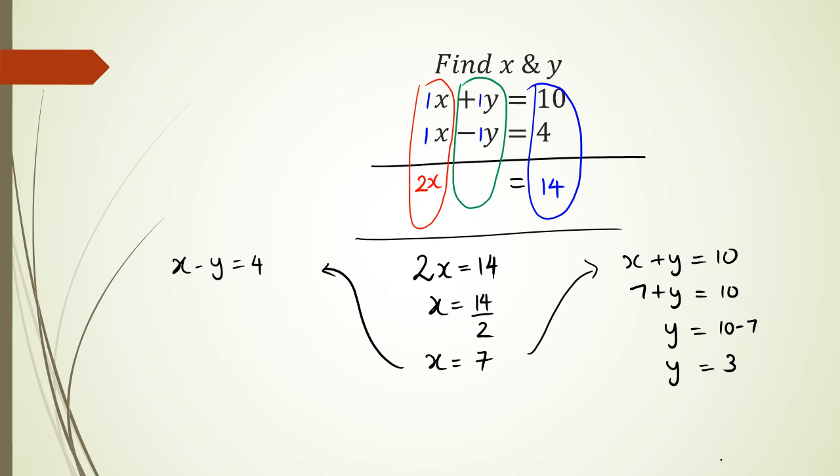On the other hand, I've got 7 minus y equals 4. Negative y equals 4 minus 7. Negative y equals negative 3. Therefore, y equals negative 3 divided by negative 1, which is positive 3. And as you can see, both sides you get the same answer.